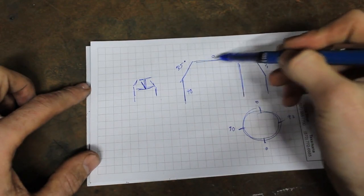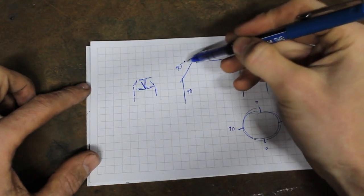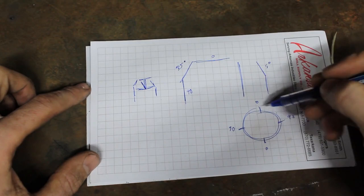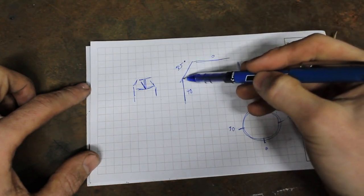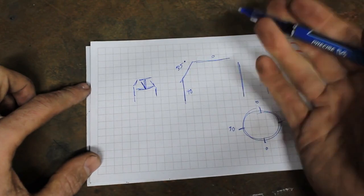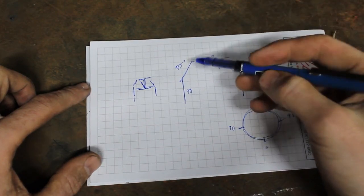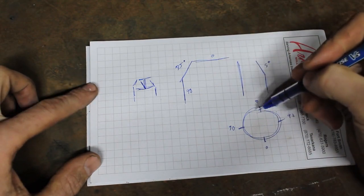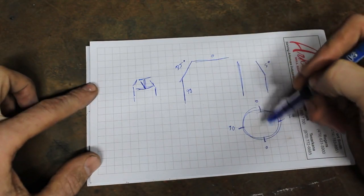When you bend this tube right here, it's in the same plane, so we're indexed zero degrees. When you bend this tube here, we're in a new plane because we're bending it inwards to create this angle and we are out of that index by five degrees.